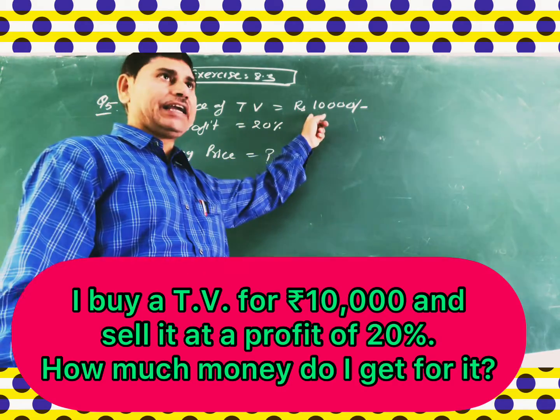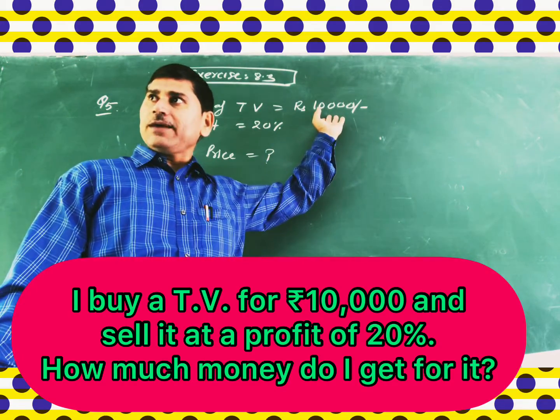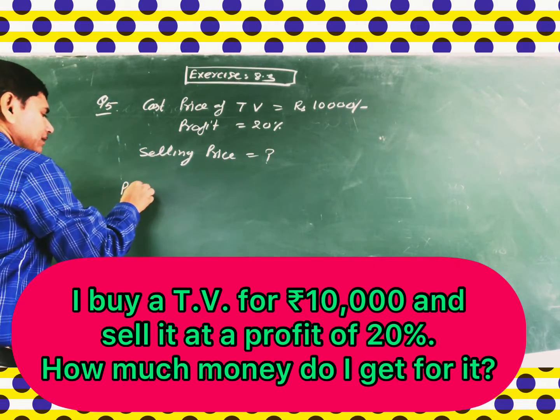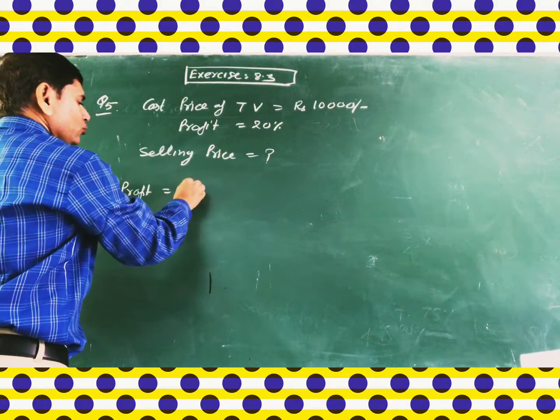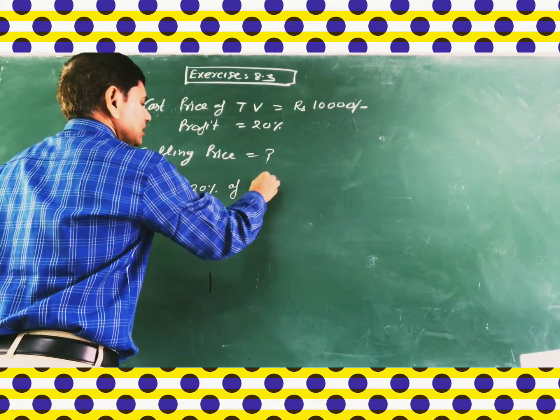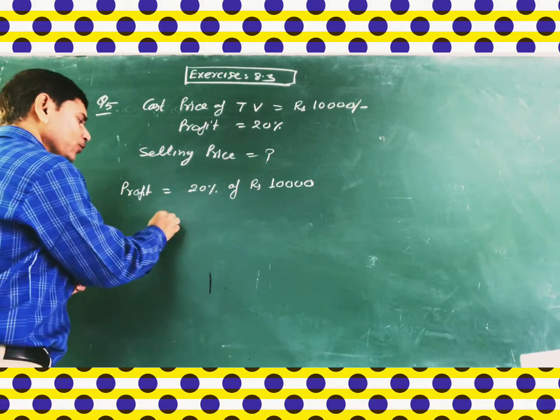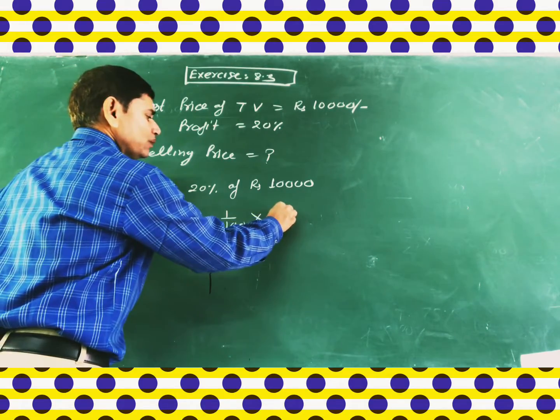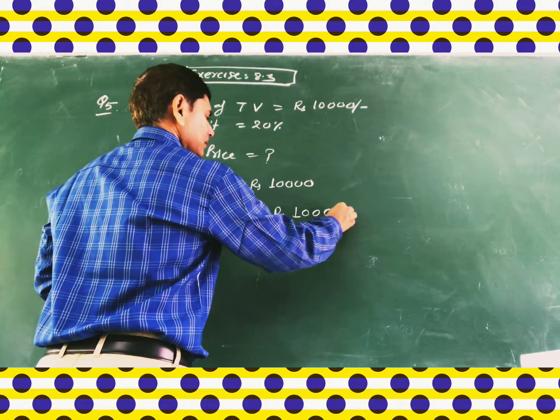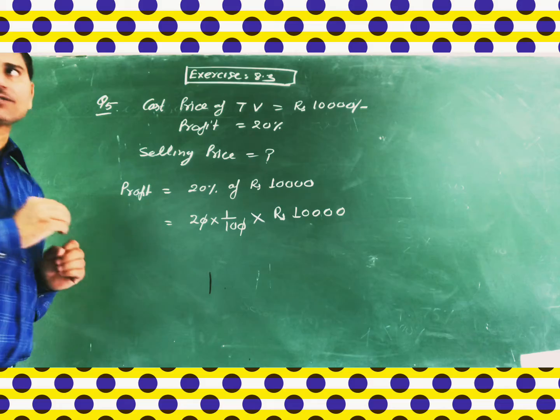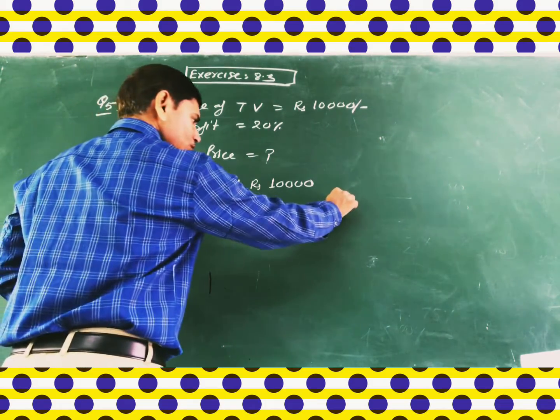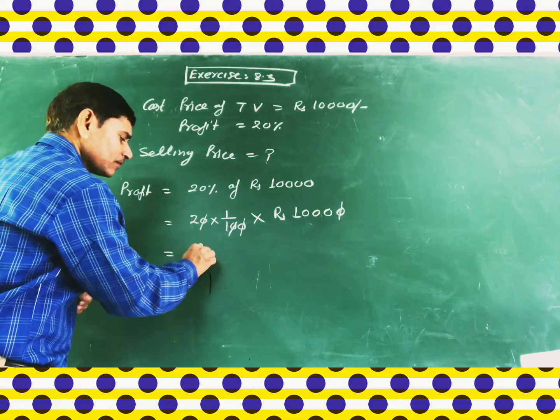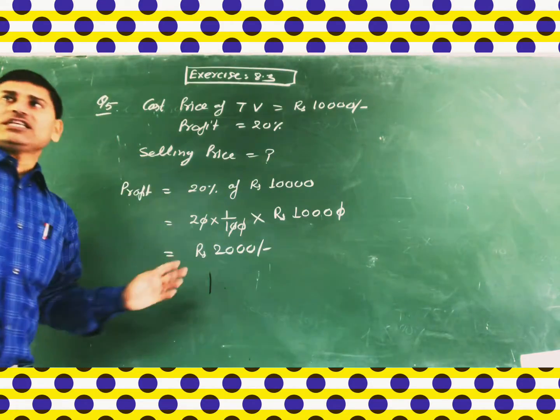First, we will find what is 20 percent of 10,000. So profit equals 20 percent of rupees 10,000. You know very well percent means one by hundred, of means multiply, and rupees 10,000. Now you can see that this zero and this zero is cancelled out, and again this one zero and this zero is also cancelled out. So remaining is two into thousand, which means two thousand. So this is the profit.